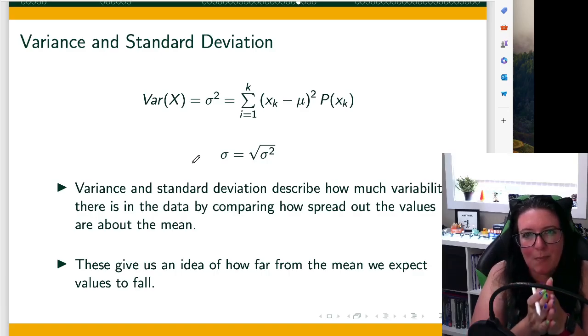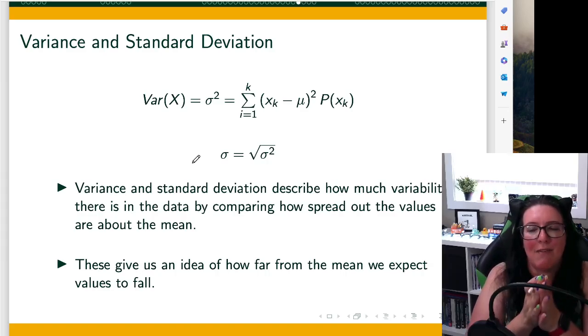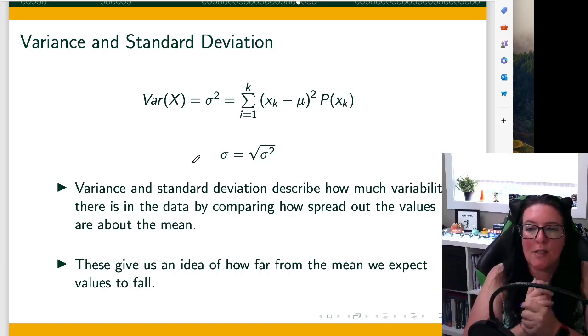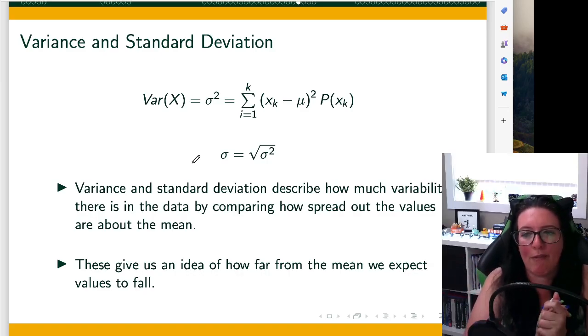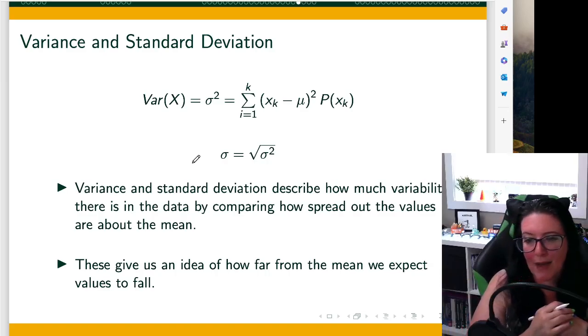We have an expected value. We roll two dice, we expect to get a seven. How much does the totals run around that seven? When we toss three coins, how much does the number of heads differ from that expected value of 1.5? How far apart are we from that expected value?